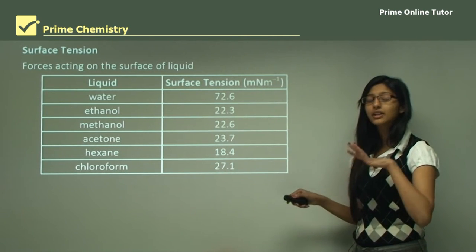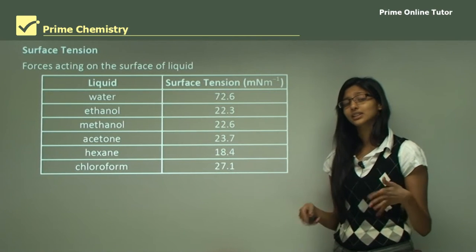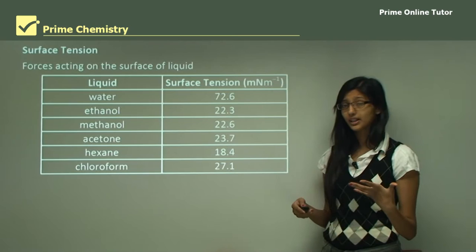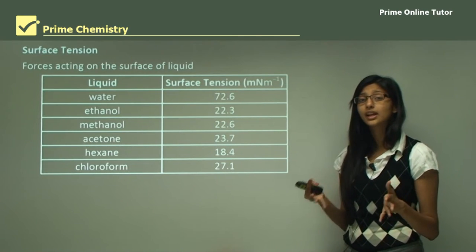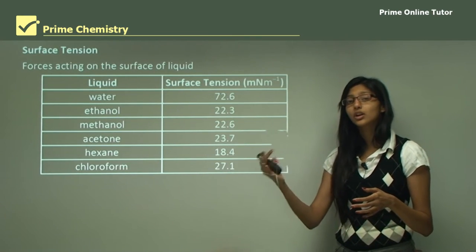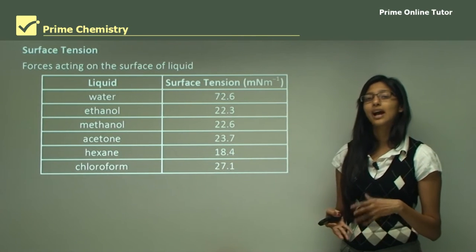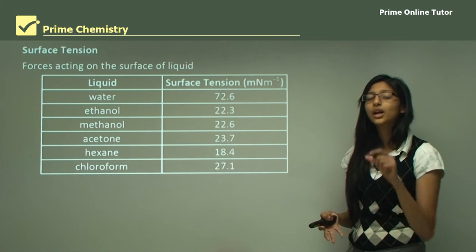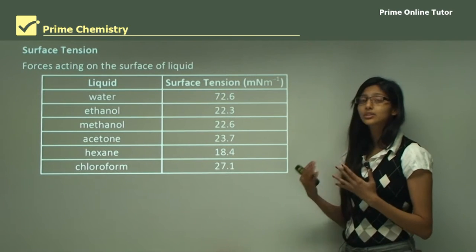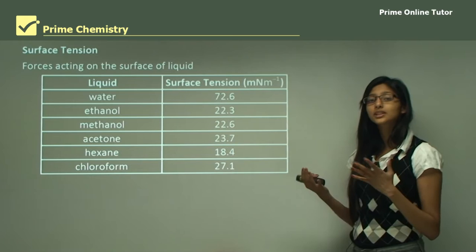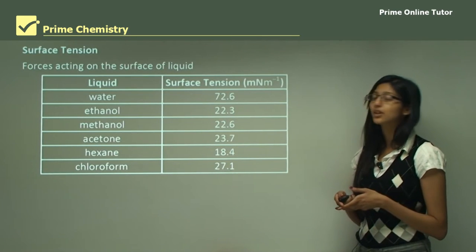Water has a very strong surface tension, and as a result, as you will see in the following slides, this high surface tension allows insects to walk on it. You can see insects walking on water, and also when you put a coin on water it floats. All these are due to the unbalanced upward forces caused by the water molecules on the surface of the liquid.